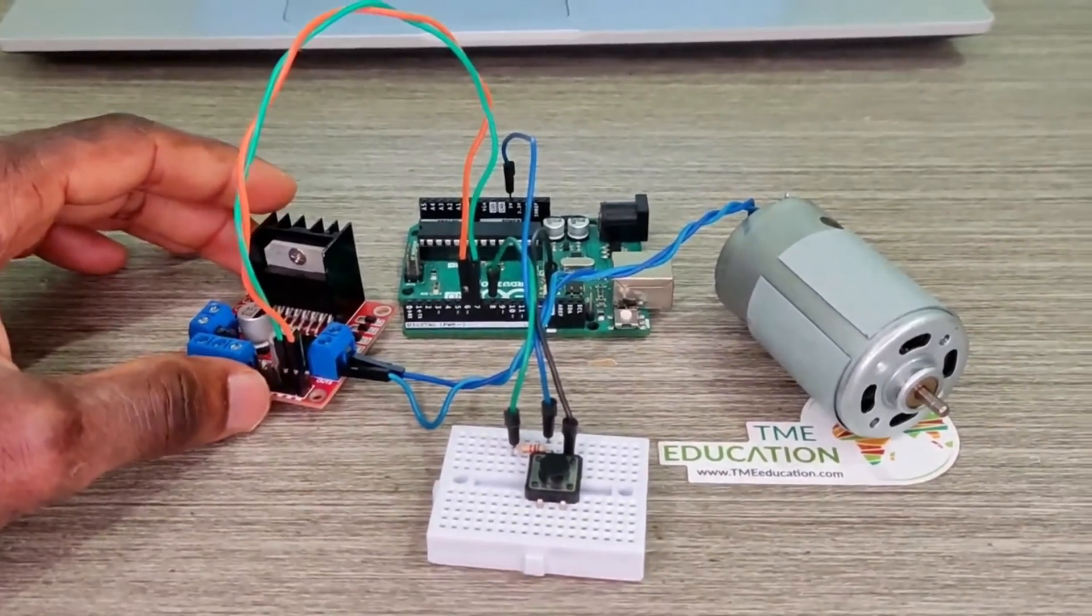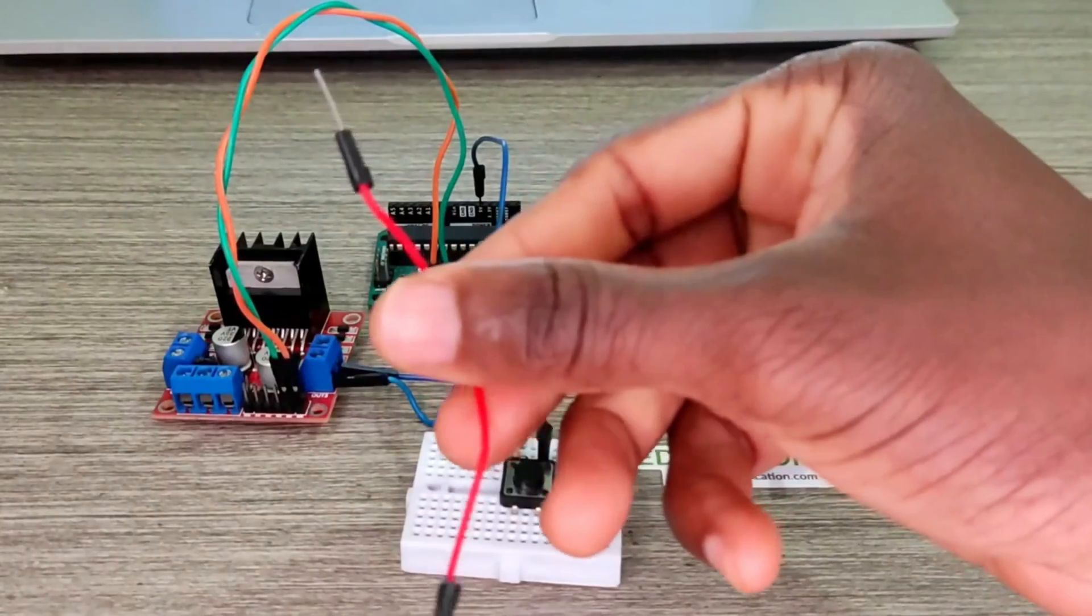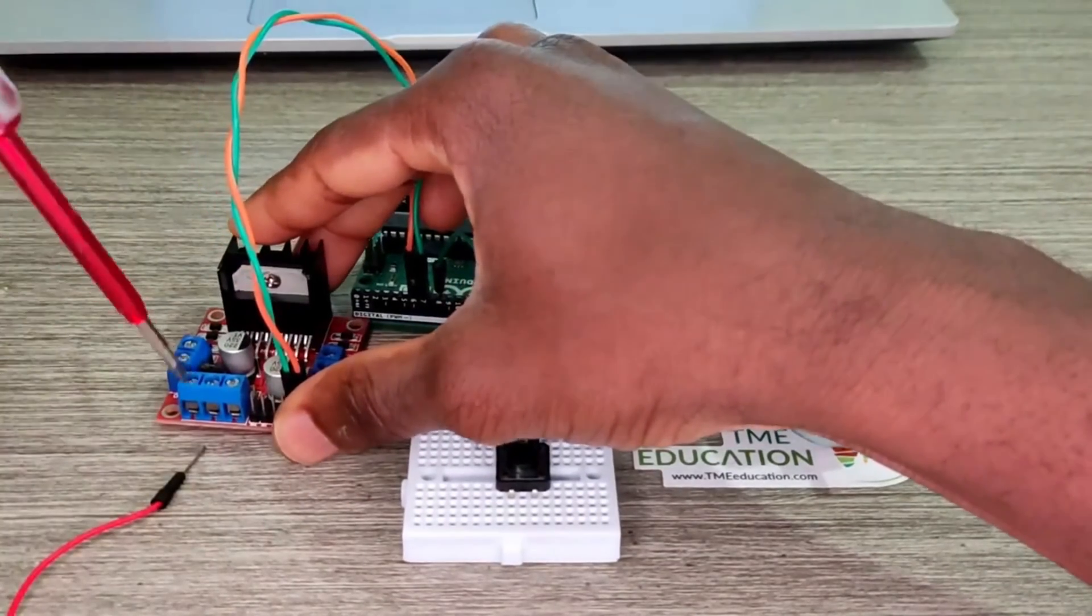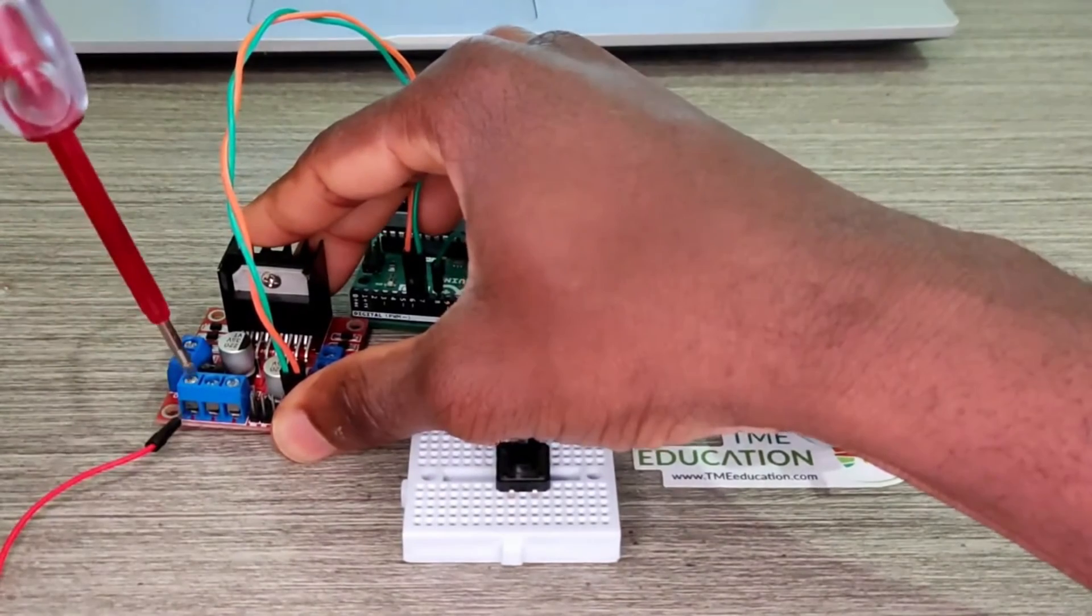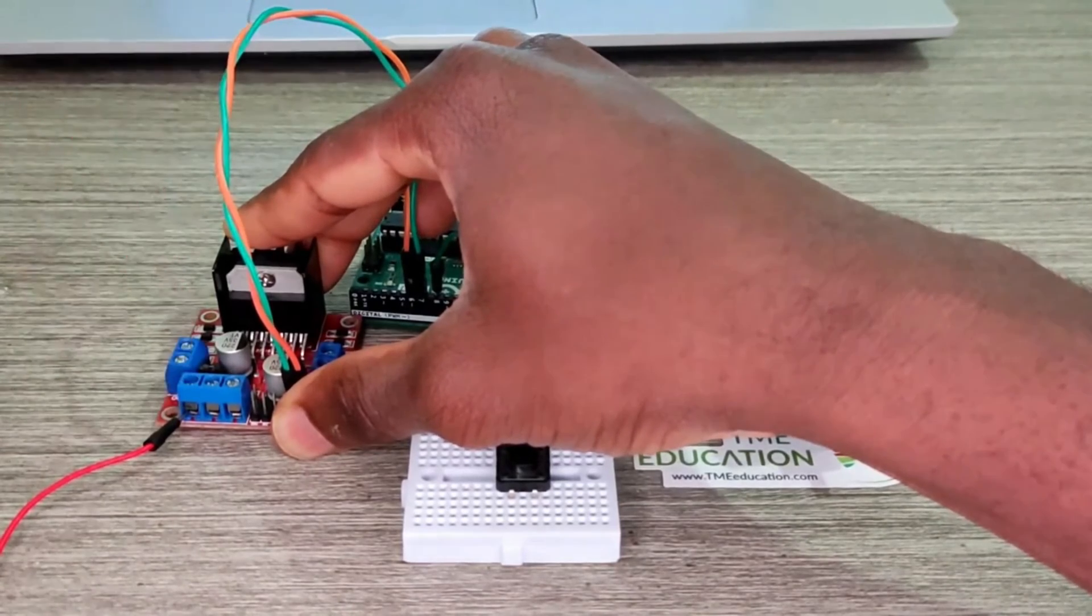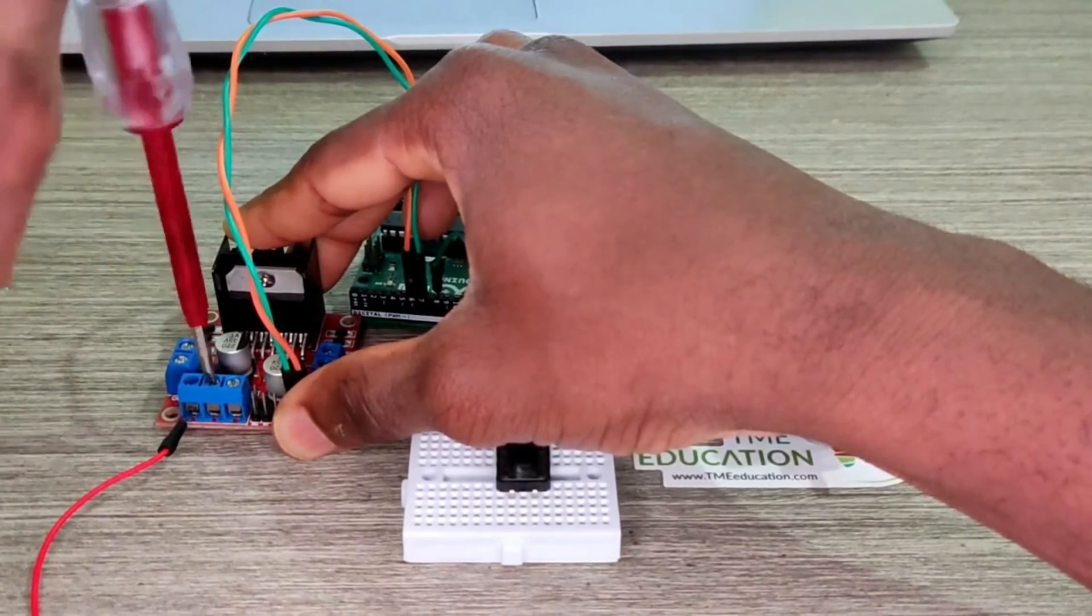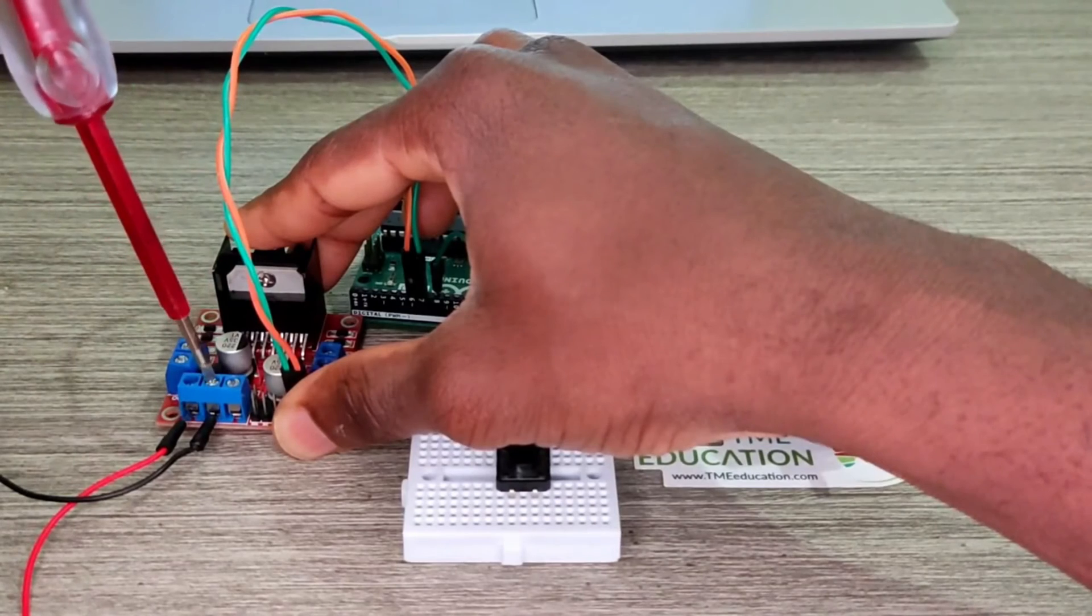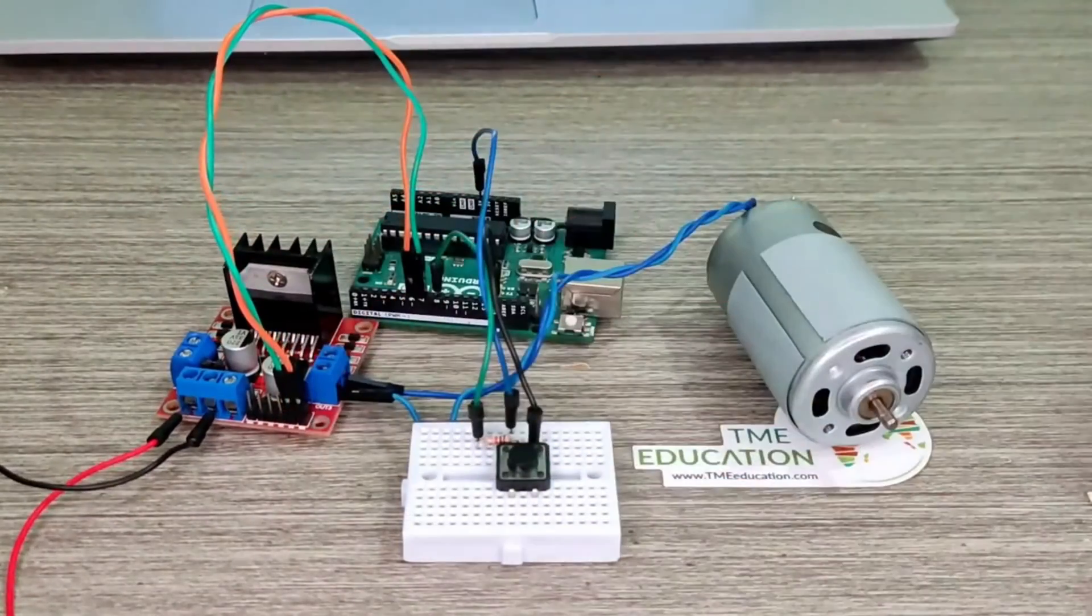To vary the speed of the motor we need PWM signal. Now I'm going to power this board with 7.6 volts. Let us do that. 7.6 volts, that's the ground input. 7.6 volts, we did it.